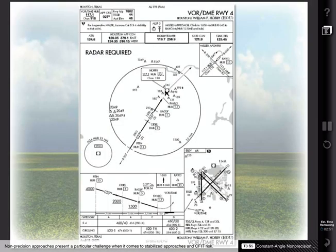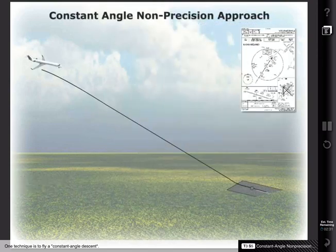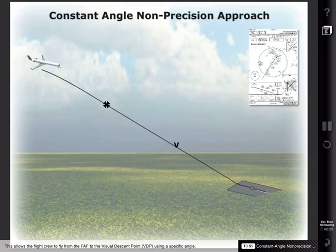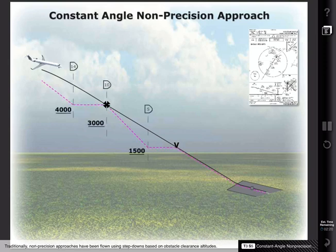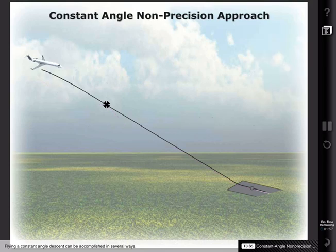Non-precision approaches present a particular challenge when it comes to stabilized approaches and CFIT risk. Non-precision approaches lack a vertical guidance component and are rarely encountered. As pilots may be less familiar with these approaches, there are some techniques to reduce the likelihood of an accident. One technique is to fly a constant angle descent. This allows the flight crew to fly from the final approach fix to the visual descent point using a specific angle. Traditionally, non-precision approaches have been flown using step-downs based on obstacle clearance altitudes, typically requiring a high workload with multiple level-offs and large power changes. By using a constant angle approach, the aircraft can be flown using a constant vertical speed and aircraft power setting.